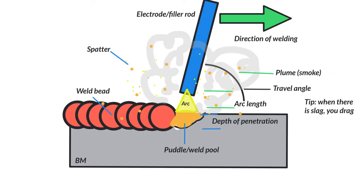This is breaking down the stick welding process. I have my electrode filler rod on an angle in the direction I'm going. When there is slag, you drag — that applies to flux core arc welding and stick welding. It doesn't always work that way: for a vertical up, you're not going to drag it up, you're actually going to tip it forward and push it rather than dragging it.